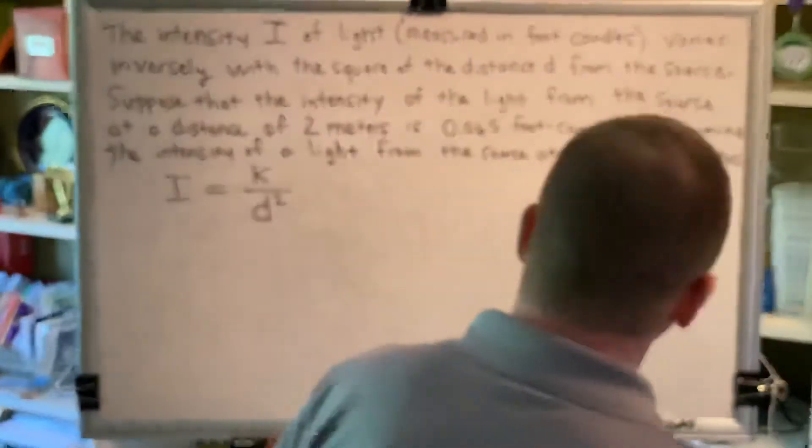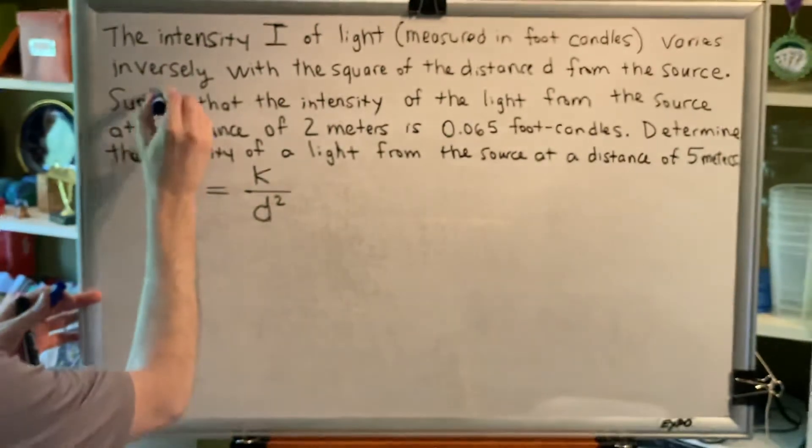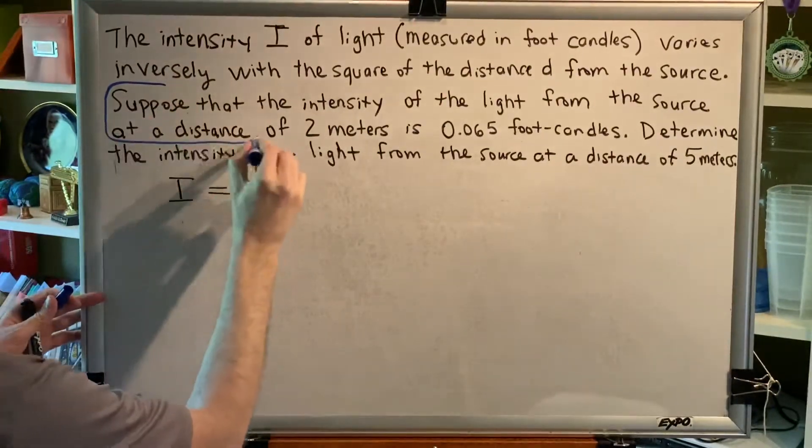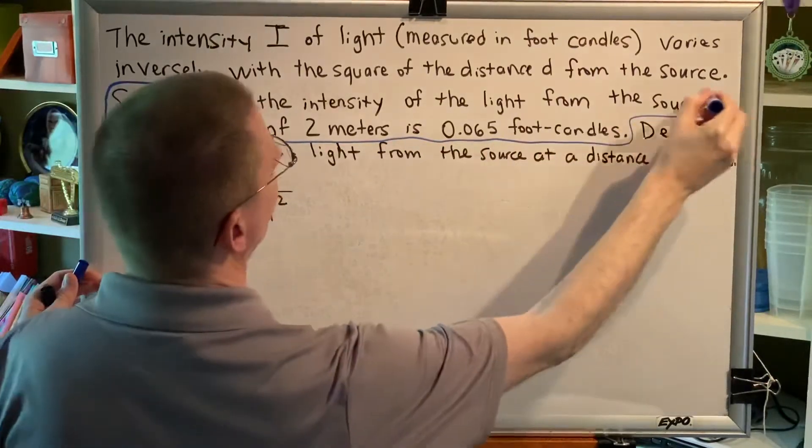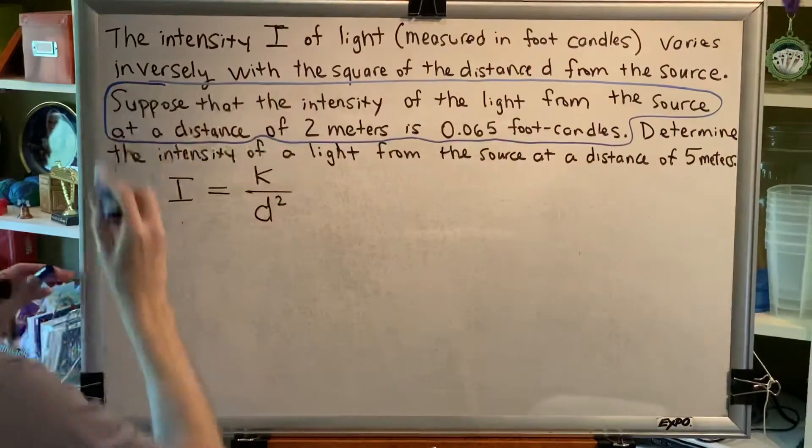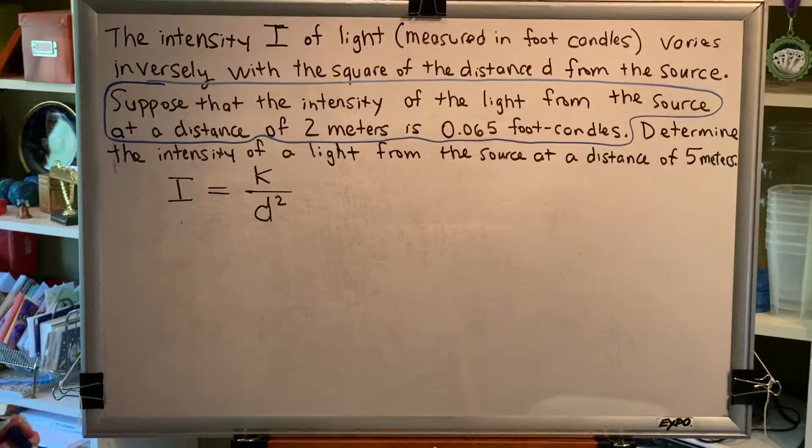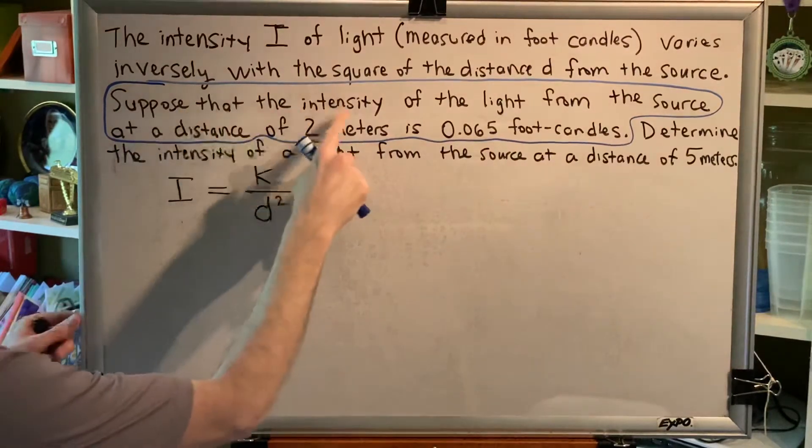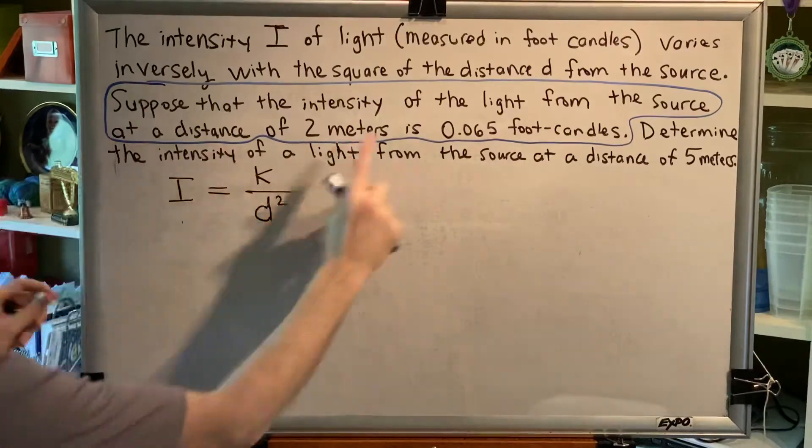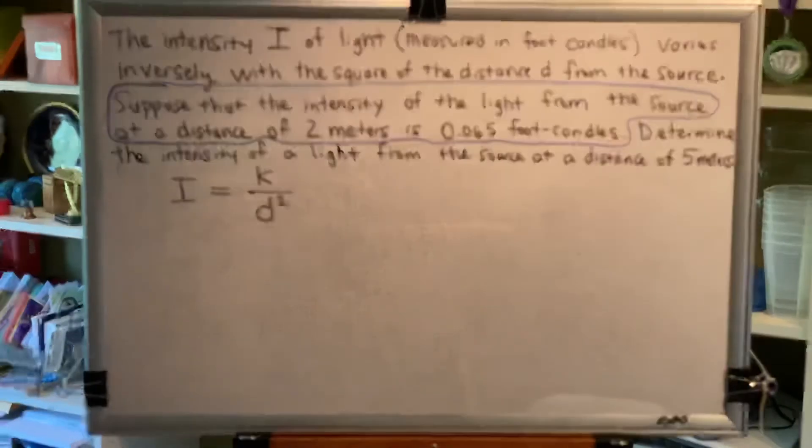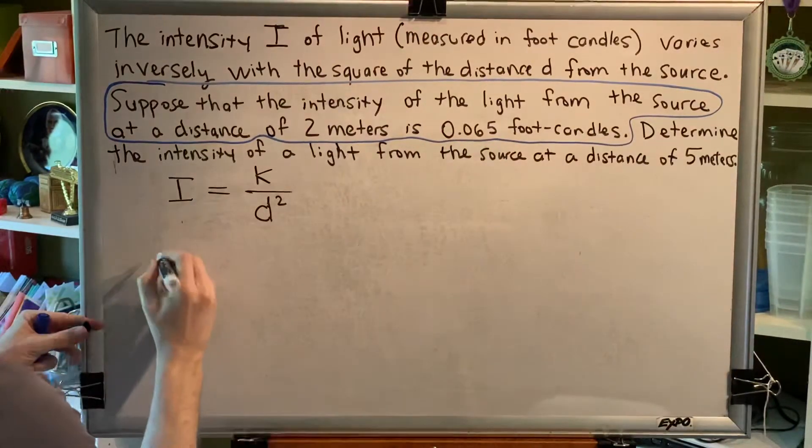We're going to get the information we need from the second to last sentence. Suppose that the intensity of the light from the source at a distance of 2 meters is 0.065 foot candles. Think about what that's telling us. That's telling us the distance - distance of 2 meters - and it's telling us the intensity. So, I is 0.065.